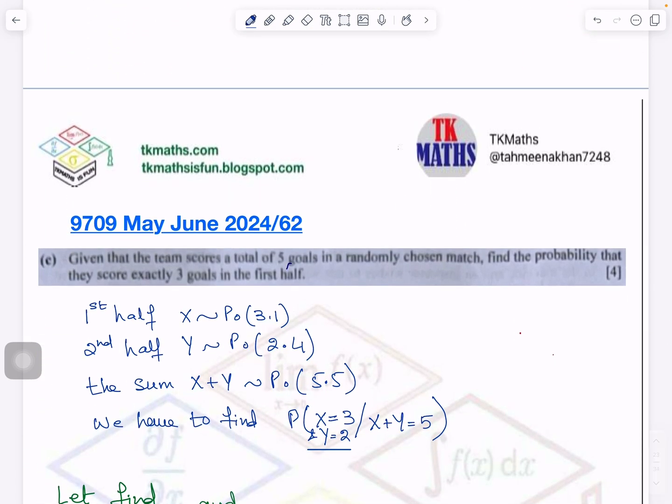This part was tricky. It is related to conditional probability. Condition is that in a match there were 5 goals. But you have to find the probability when the first half has 3 goals. Now if first half has 3 goals then how many goals happen in the second half so that all together they are 5. It is understood 2 goals only then 3 plus 2 will be 5.